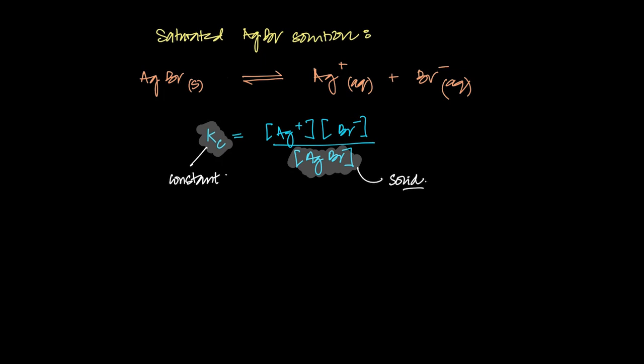So basically what we can do is we can combine this Kc with this solid. So Kc times silver bromide concentration can be considered to be just the product of the ions now.